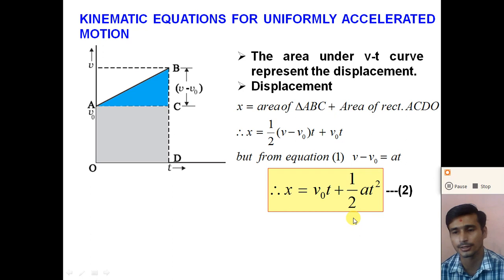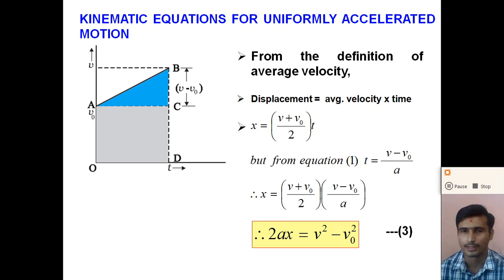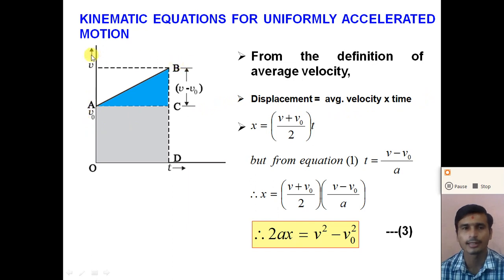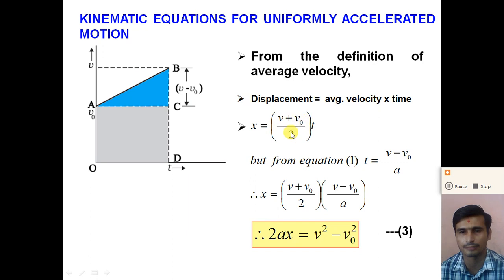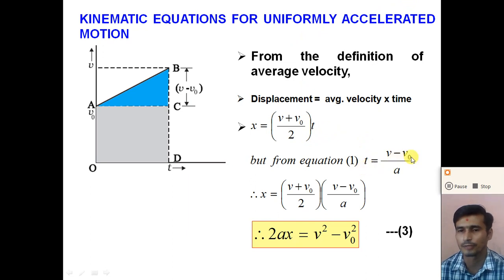Now let us derive the third equation — the relation between velocity and distance. From the definition of average velocity: displacement = average velocity × time. With initial velocity V₀ and final velocity V, the average velocity = (V + V₀)/2. So X = (V + V₀)/2 × T. From equation 1, V − V₀ = AT, so T = (V − V₀)/A.